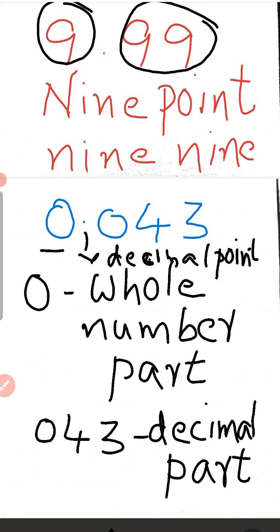So the part which is to the left of the decimal point is the whole number part, and the part which is to the right of the decimal point is the decimal part or fractional part.